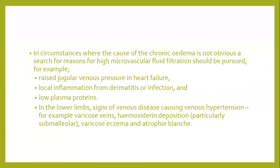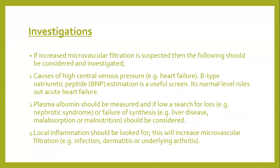If increased microvascular filtration is suspected, the following should be investigated: firstly, causes of high central venous pressure such as heart failure. B-type Natriuretic Peptide (BNP) estimation is a useful screening test for heart failure — normal levels rule out acute heart failure. Plasma albumin should be measured; if low, search for loss, such as nephrotic syndrome, or failure of synthesis, for example liver disease, malabsorption, or malnutrition.